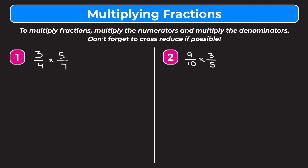So when we multiply fractions we just multiply both numerators together. We multiply 3 and 5 to get 15, and then multiply the denominators: 4 times 7 is 28. Since 15 and 28 don't have any common factors, we can't simplify, so our answer is 15 over 28.